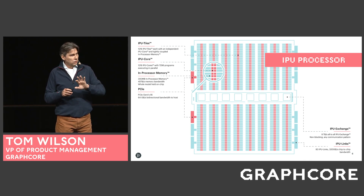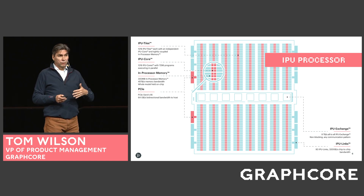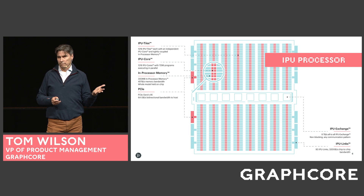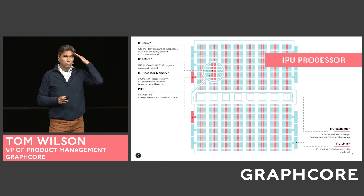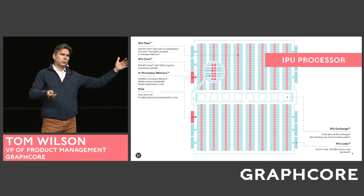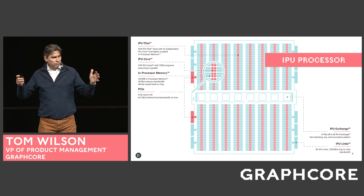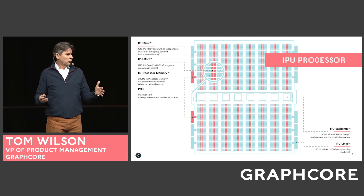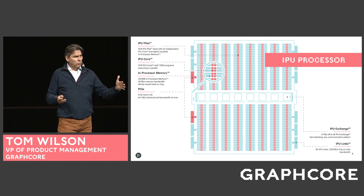These massively parallel independent MIMD processors are also multi-threaded: six threads per processor tile, giving something over 7,000 independent processor threads each working on smaller blocks of data. In GPU think, you might think about threads in a warp — 32 threads combined in a warp — where you have to load large vectors across the warp to make efficient use. So it's large blocks of data, deep kernels, dense matrix math.